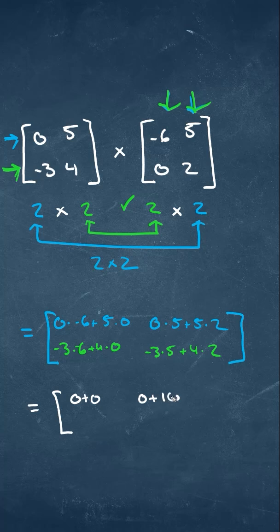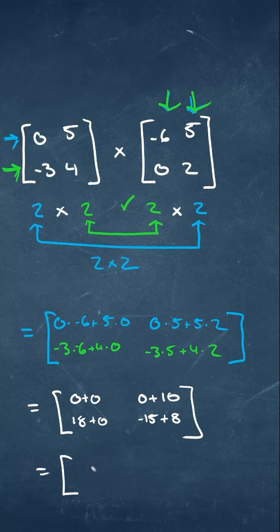We'll multiply each of those numbers in each cell, so we'll have 0 plus 0, plus 0 plus 10, 18 plus 0, and negative 15 plus 8. Adding that together, our final matrix will be 0, 10, 18, and negative 7.